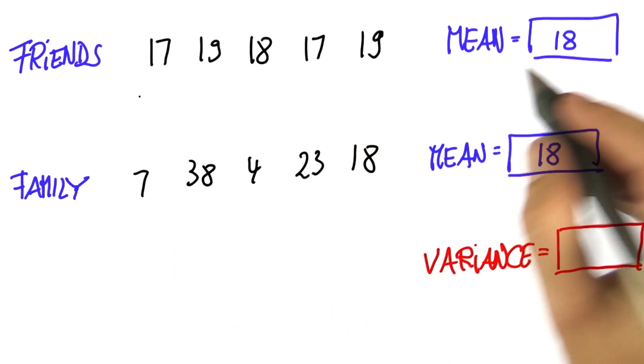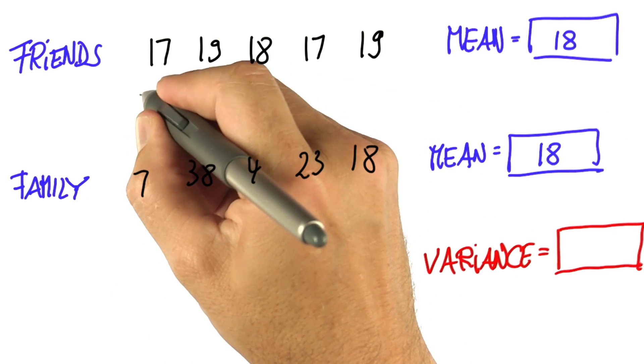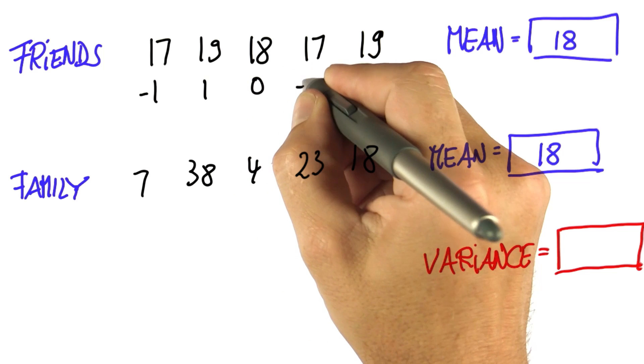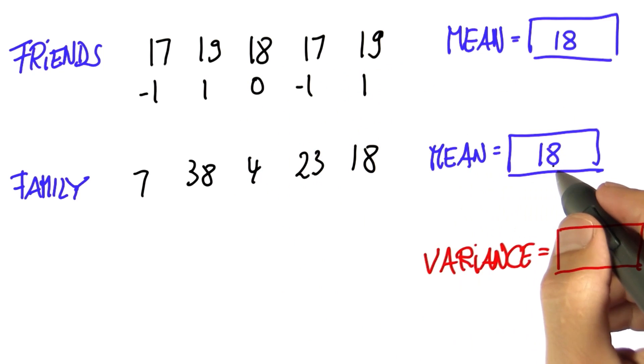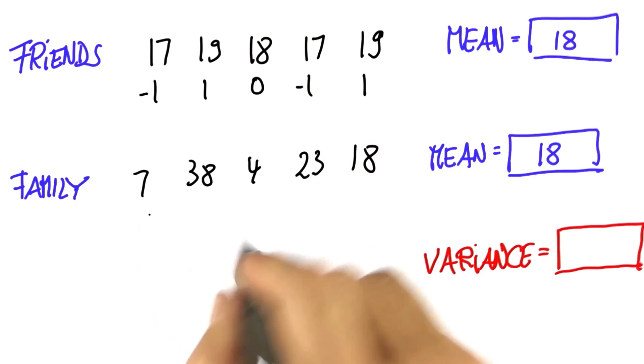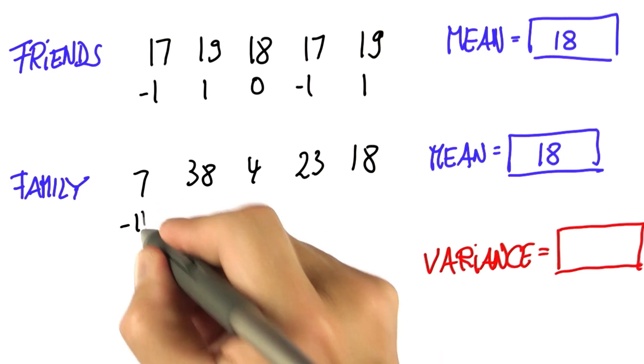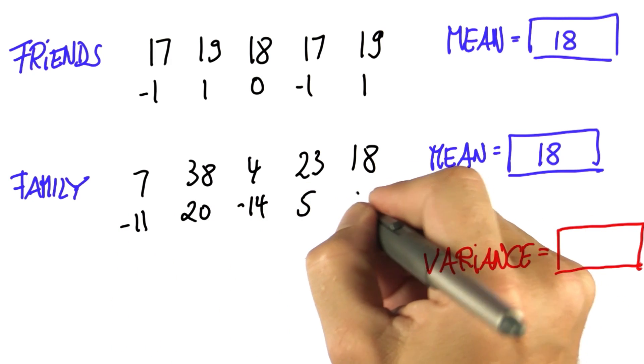So in the case of the friends, if we subtract 18 from 17, we get minus 1, 1, 0, minus 1, 1. If we subtract 18 from this data sequence, we get minus 11, 20, minus 14, 5, and 0.